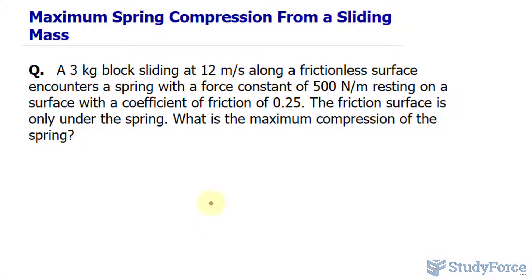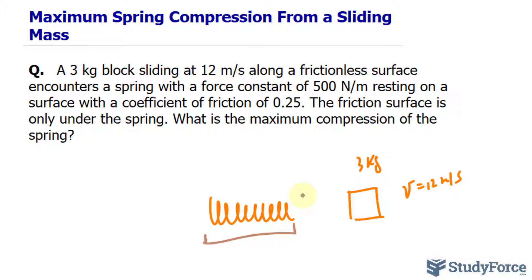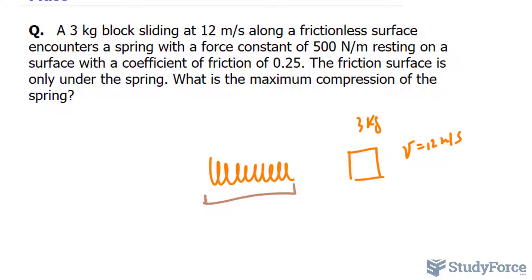Let's begin with an illustration. We have a spring that is uncompressed, and a mass of 3 kilograms moving at a velocity of 12 meters per second. The friction starts along the surface here. The first thing I want to do is calculate the kinetic energy that exists before this mass comes in contact with the spring.